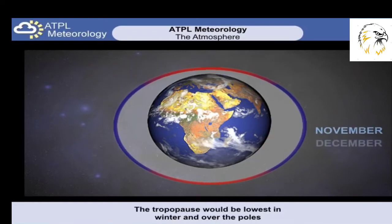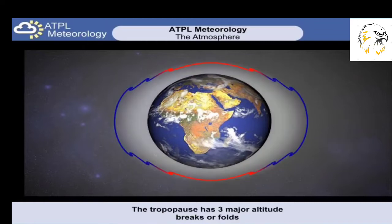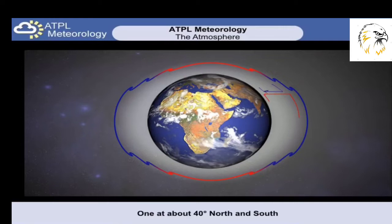It follows that when the troposphere is at its coolest, i.e. over the poles in winter, then the tropopause would be at its lowest. However, there are places where the tropopause folds or breaks. This is where we find a significant difference in the temperature in the troposphere, and therefore a significant tropopause altitude change. The first of these is at about 40 degrees latitude, where the warm air circulating from the equator meets much cooler air circulating from mid-latitudes. This temperature difference in the troposphere causes a height change of the tropopause.